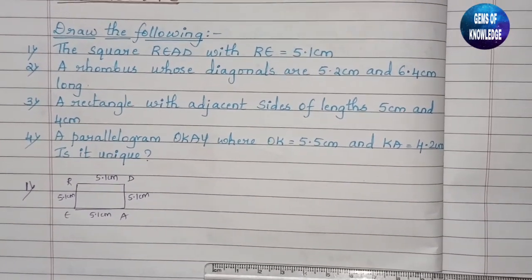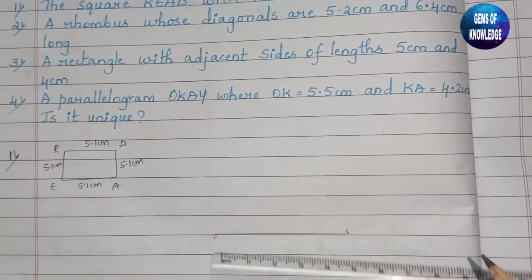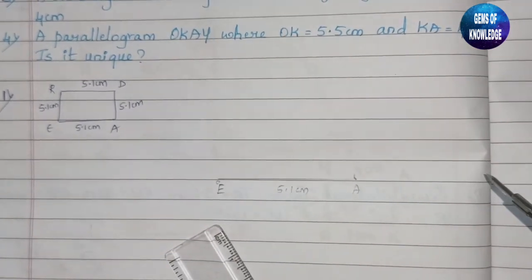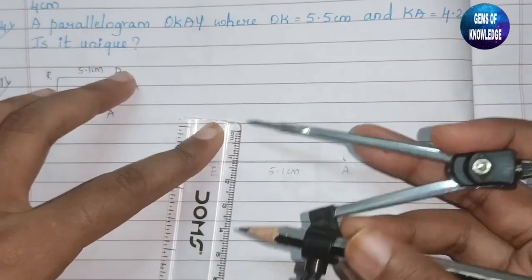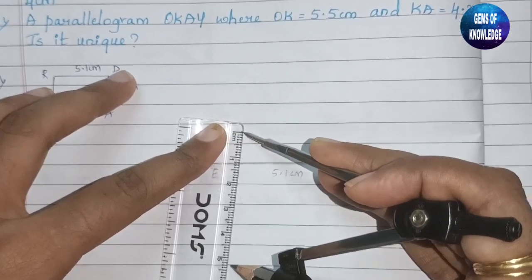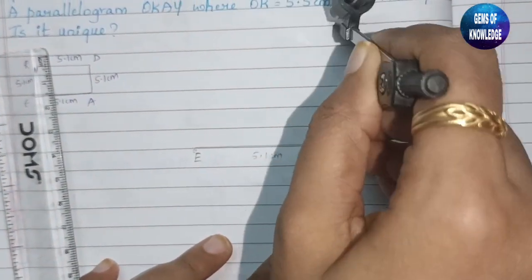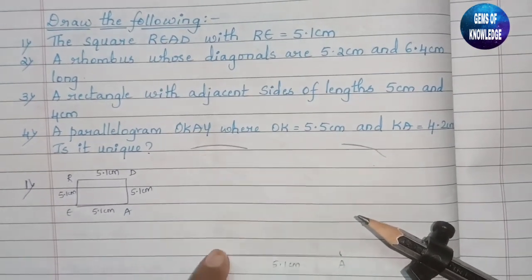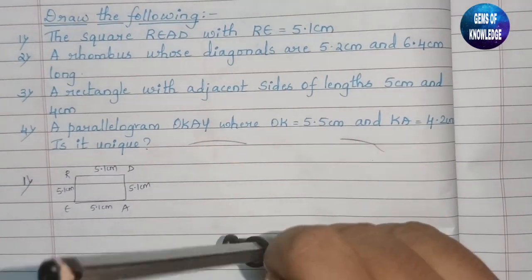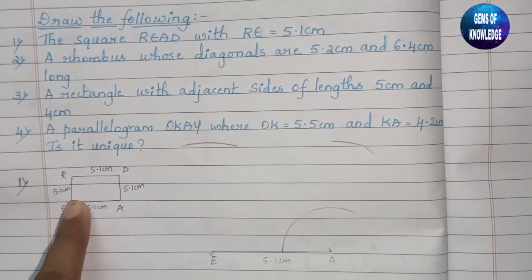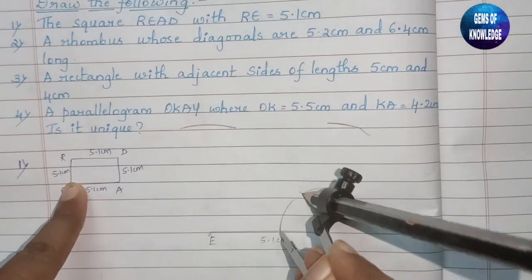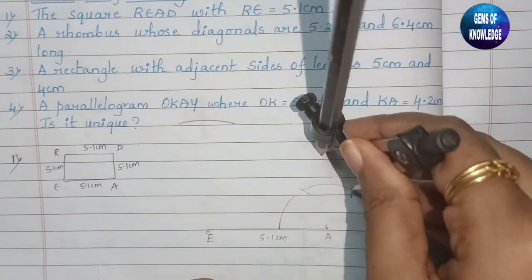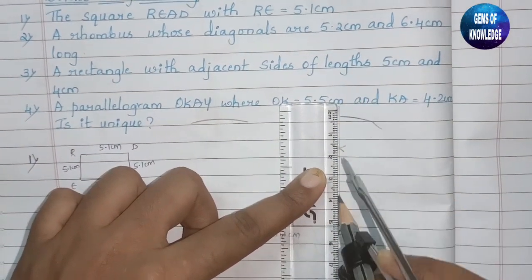We start by drawing a side of 5.1 centimeters — this is E and this is A. From point A, we take another 5.1 centimeters. Now we need a 90-degree angle because all angles of a square are 90 degrees. To construct 90 degrees, we draw one arc, getting 60 degrees, then another arc giving 120 degrees. Between those two arcs we get exactly 90 degrees. This 90-degree line is constructed from both sides.